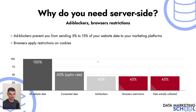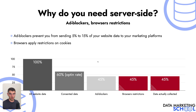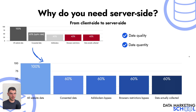In this example, you have 45% of the data left. Your data quantity doesn't decrease anymore, but your data quality is altered by some browser restrictions. In the end, this is 45% of all your website data that you are able to collect — and even this 45% is not of high quality because of browser restrictions. This example shows you the difference between client-side and server-side, and the improved data quality and data quantity.